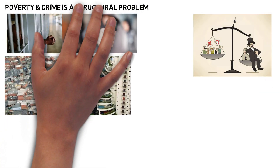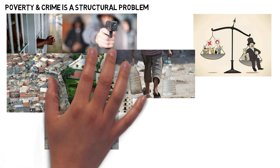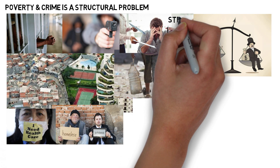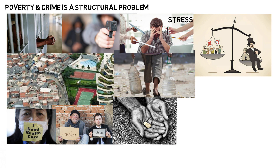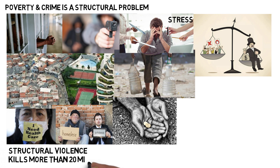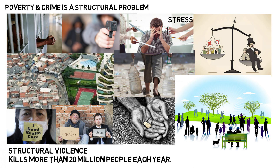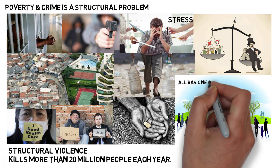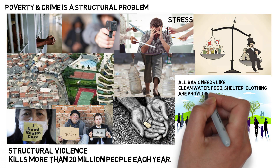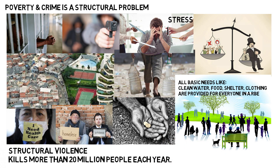Almost all criminal acts and human suffering today can be linked to poverty and inequality. Crime and poverty is a structural problem due to the current monetary system, and is referred to as structural violence. It is estimated that structural violence kills more than 20 million people each year. This could easily be avoided. For instance, there is more than enough food for everyone, but the structure inhibits some people from buying food because they don't have enough money. In an RBE, there is no poverty, and all basic human needs like clean water, food, shelter, and clothing are provided for everyone.